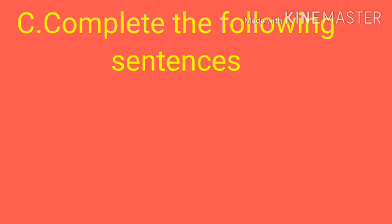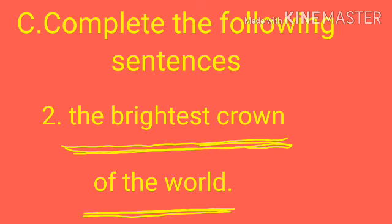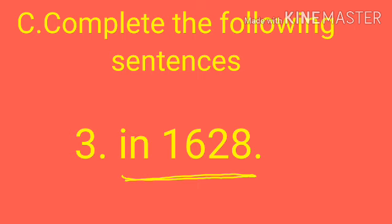C: Complete the following sentences with information from the text. Question 1: One day Khurram went to the Mina Bazar with his friends. Question 2: Mumtaz Mahal means 'the brightest crown of the world.' Question 3: Khurram became the emperor — the answer from the text is given here.